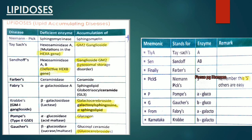Mnemonic for lipid storage diseases — TIA SEN F PIX PG K: T = Tay-Sachs (hexosaminidase A), S = Sandhoff (hexosaminidase A and B), F = Farber's (ceramidase), PIX = Niemann-Pick (sphingomyelinase), P = Pompe's (alpha-glucosidase), G = Gaucher's (beta-glucosidase), F = Fabry's (alpha-galactosidase), K = Krabbe's (beta-galactosidase).